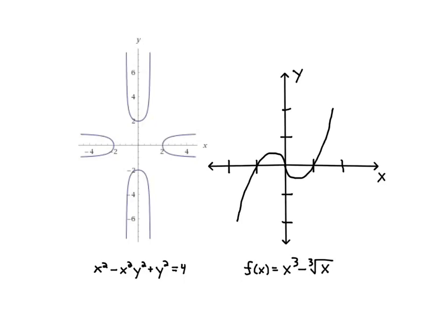I wanted to show you graphs of two of these functions. The one we've been looking at most recently is the first one here: x² - x²y² + y² = 4.